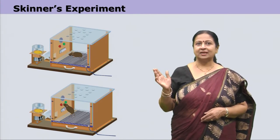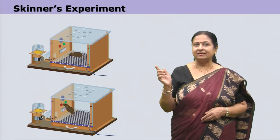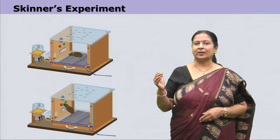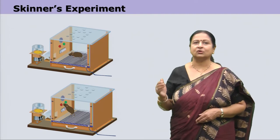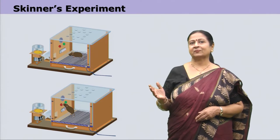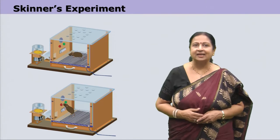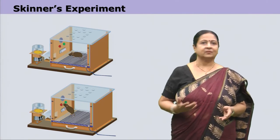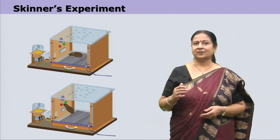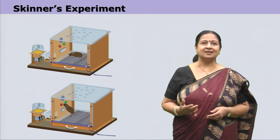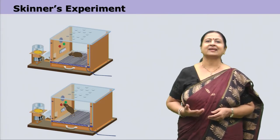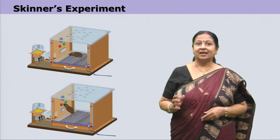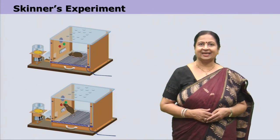Look at this Skinner's box. He made a box in such a way that there is a lever fitted into the box and also a food dispenser which will drop food pellets whenever the experimenter wants. A hungry rat is placed within the box, and what the experimenter wants the rat to do is press the lever. In the beginning, the rat makes random movements — it is hungry and wants food. By chance it presses the lever, and suddenly a food pellet is dropped into the box from the dispenser and the rat gets the food, as you can see in the second diagram. The rat then goes on depressing the bar again and again in the hope of getting more food.